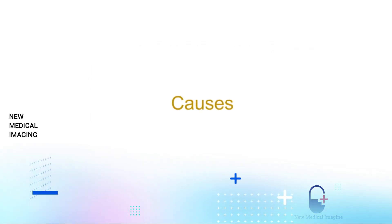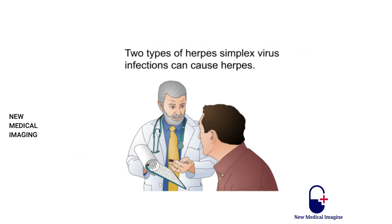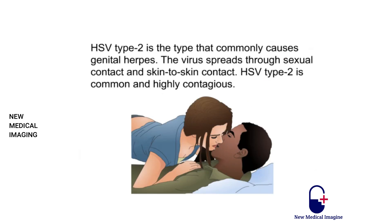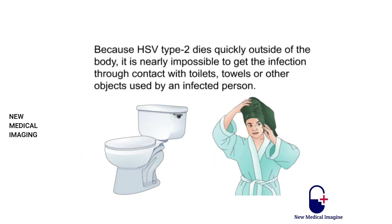Two types of herpes simplex virus infections can cause herpes. HSV type 1 usually causes cold sores around the mouth, spread by close personal contact such as kissing, but it can also be spread to the genital area during oral sex. HSV type 2 commonly causes genital herpes and spreads through sexual contact and skin-to-skin contact. Because HSV type 2 dies quickly outside the body, it is nearly impossible to get the infection through contact with toilets, towels, or other objects used by an infected person.